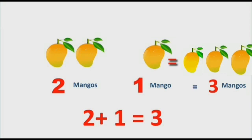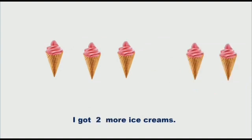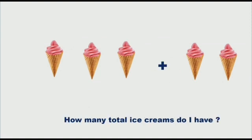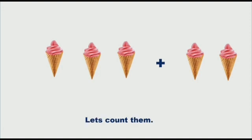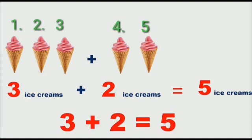Now let's take another example. I have three ice creams. And I got two more ice creams. So how many total ice creams do I have? Let's count them. Three ice creams plus two ice creams is equals to five ice creams. So what we did? We add them. Three plus two is equals to five. So I have total five ice creams.